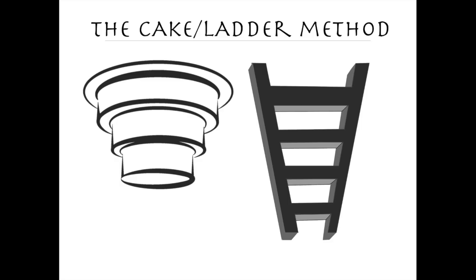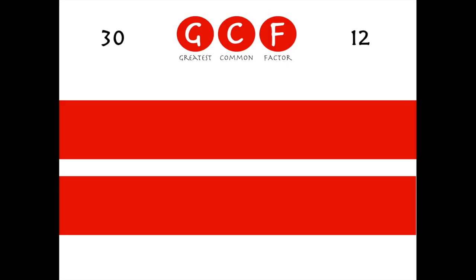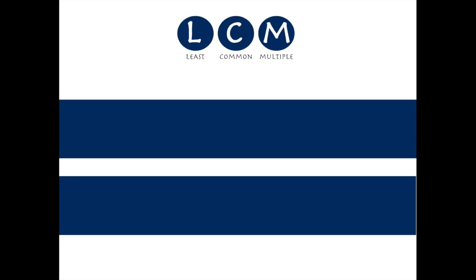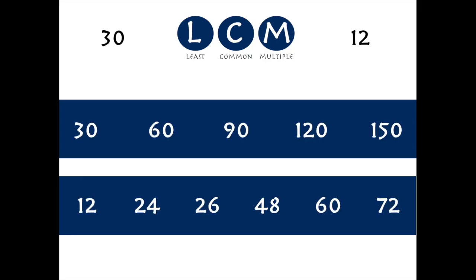Let's start with a quick look at how we've found the greatest common factor and least common multiple before. For greatest common factor, we took our two numbers — 30 and 12 — and listed the factors of both, then compared the lists to find the biggest number in common: six. For least common multiple, we list multiples of 30 and 12 and find the smallest shared value: 60.